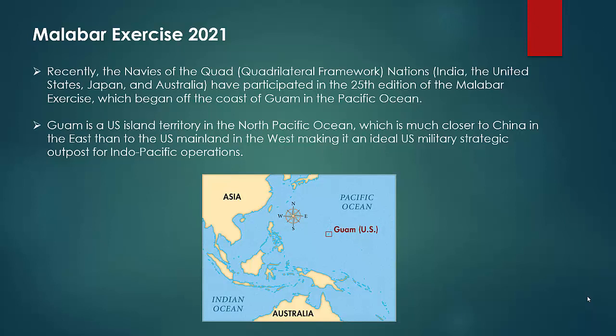Recently, the navies of the Quad nations — that is India, USA, Japan and Australia — have participated in the 25th edition of the Malabar Exercise, which began off the coast of Guam in the Pacific Ocean. Guam Island is just above Australia on the map — it is a U.S. island territory in the North Pacific Ocean, which is much closer to China in the East than the U.S. mainland in the West, making it an ideal U.S. military strategic outpost for Indo-Pacific operations.